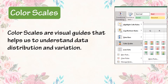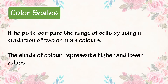Color Scales are visual guides that help us to understand data distribution and variation. It helps to compare the range of cells by using a gradation of two or more colors. The shade of color represents higher and lower values.